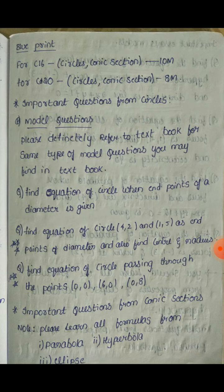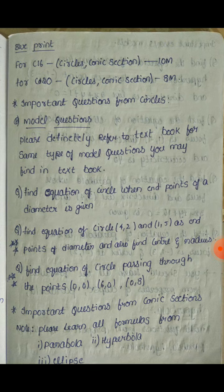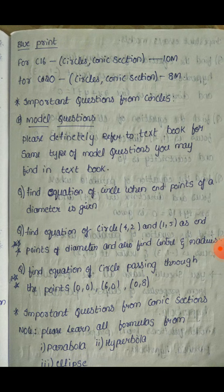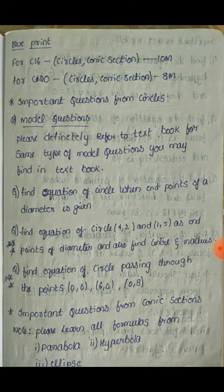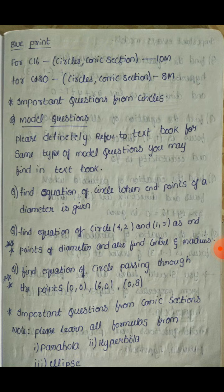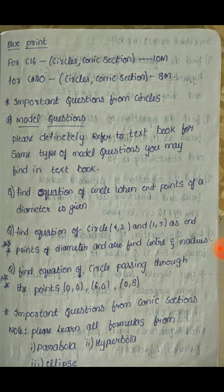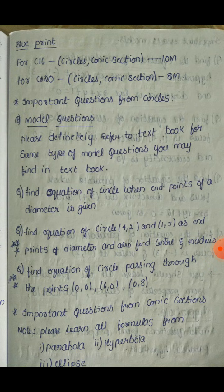Let's look at model questions for circles. Please definitely refer to the textbook for the same type of model questions. First: find the equation of a circle when the endpoints of a diameter are given — this repeats many times. Second: find the equation of a circle when two points are the endpoints of the diameter, and also find the center and radius — three-star pattern, very important. Third: find the equation of a circle passing through three points.